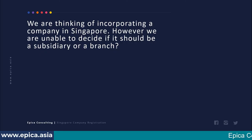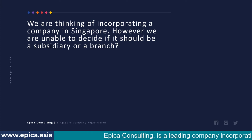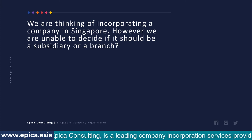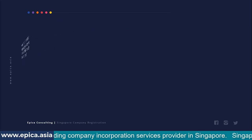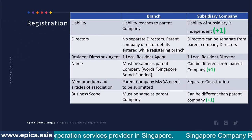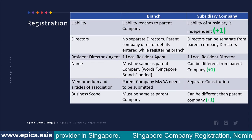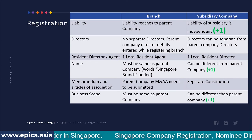The question for this presentation is: you are thinking of incorporating a company in Singapore and you are considering two options — either as a subsidiary or as a branch office. What should be your choice? To understand this, let's look at the differences between these two forms of entities and which of the options scores more.